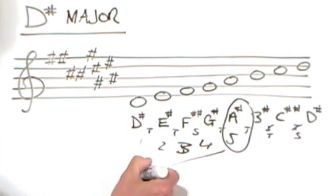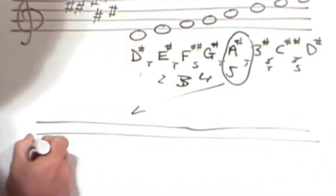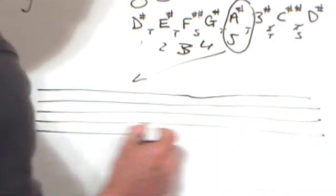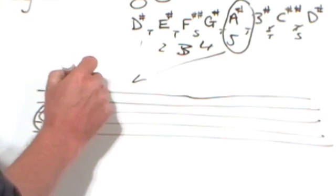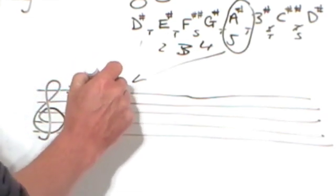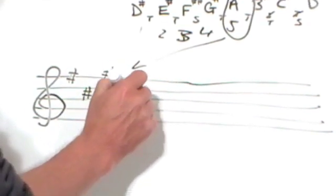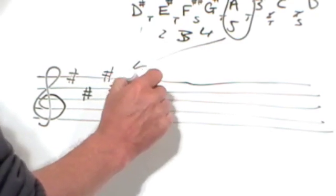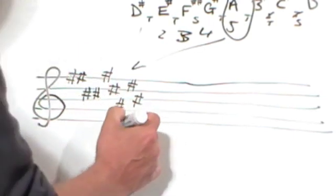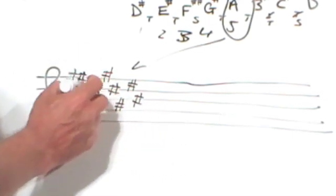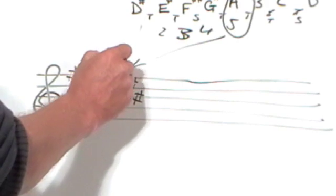Next key in the sequence. So one, two, three, four, five lines. Treble clef. Father, Charles, goes, down, and enters, battle, Father, Charles, goes. That's as far as we've got so far. But we're going to predict really that this is going to have one more sharp end. Father, Charles, goes. I reckon it's going to have a double G sharp end.